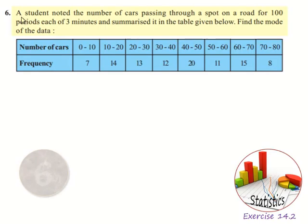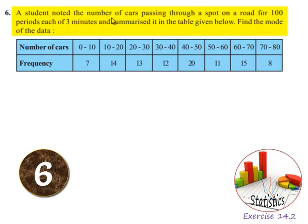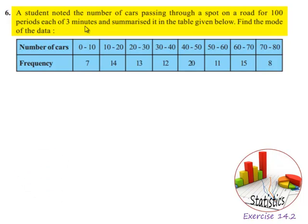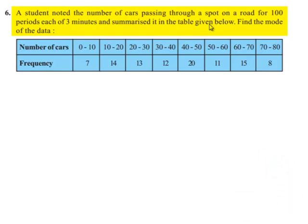Here the given problem is, a student noted the number of cars passing through a spot on a road for 100 periods each of 3 minutes and summarized it in the table given below. Find the mode of the data. Here the number of cars were given as group data and frequency were given. Let's move on to the solution.